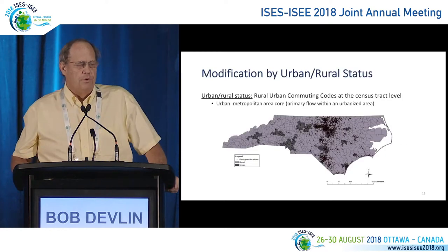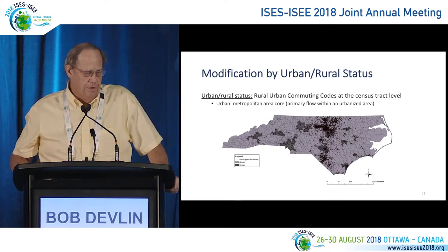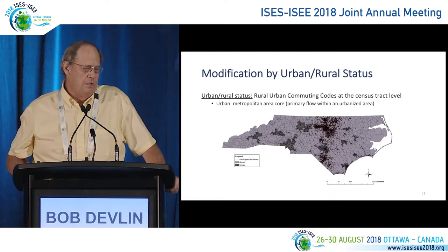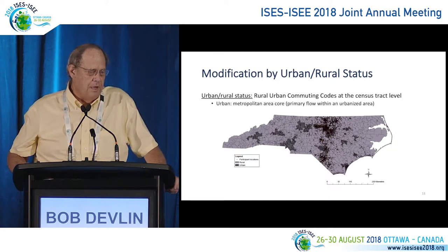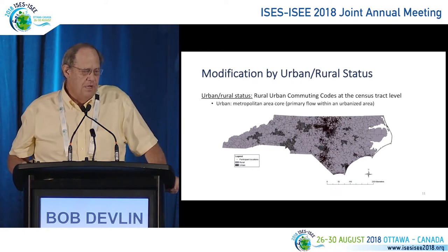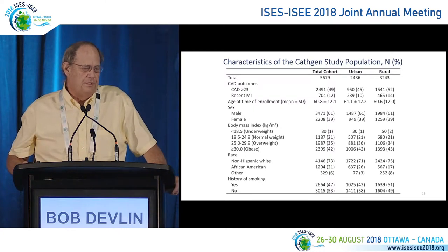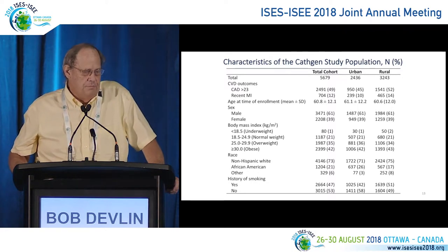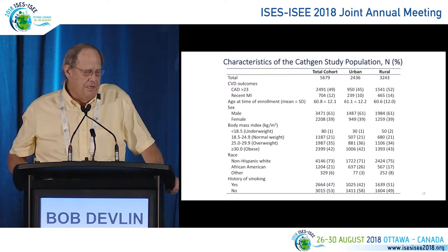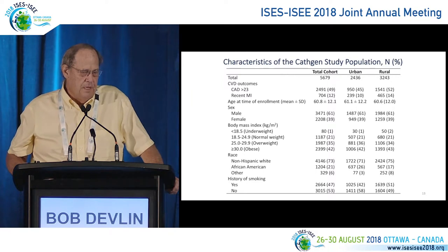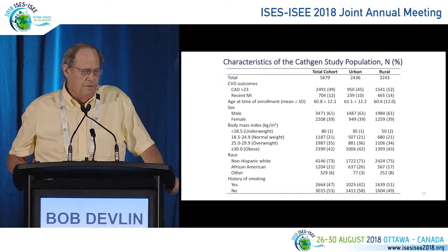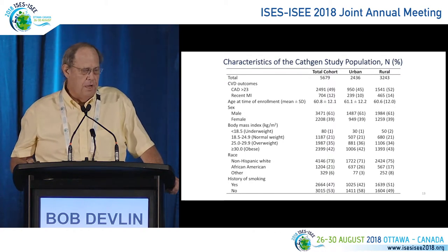Regarding urban-rural classification, the light gray area — most of North Carolina — is considered urban using census tract urban-rural commuting codes, and the dark areas are rural. The individual patient addresses appear as small black dots throughout the state. Looking at the urban versus rural populations overall, there are few notable differences: age, sex, and BMI don't differ much. There's slightly more Native Americans and blacks in the urban area, and a little more smoking in the rural area, but in general the two populations were not very different from one another.